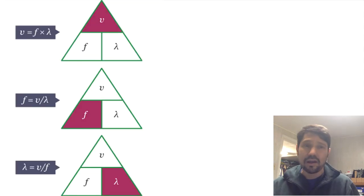We've got three variables so we can express it in three different formats. We can say velocity equals frequency times wavelength. We've got frequency equals velocity over wavelength, or lambda equals velocity over frequency.